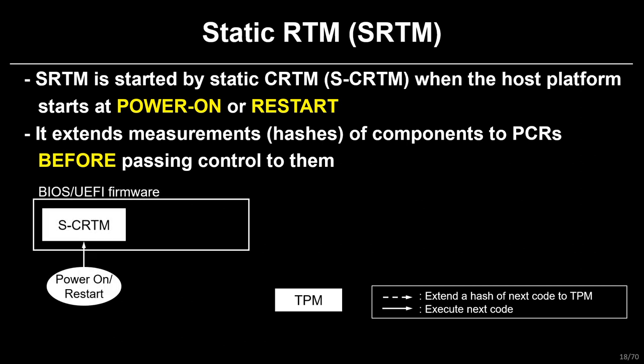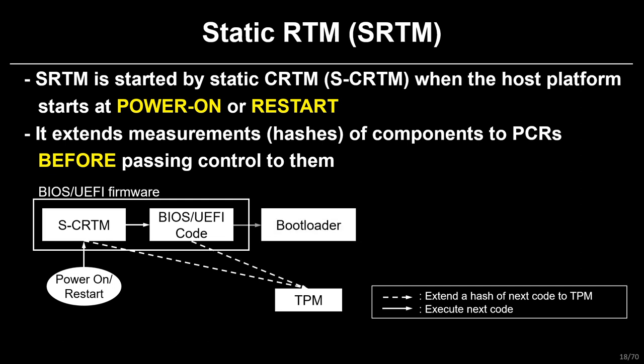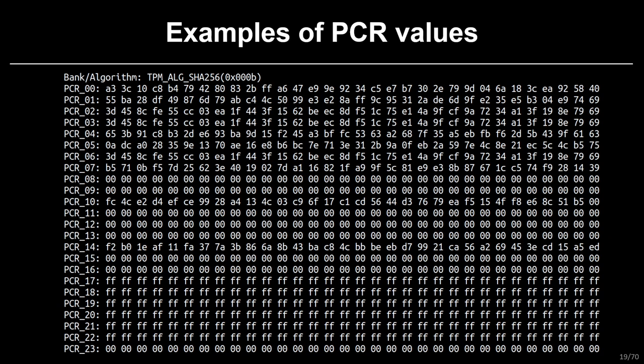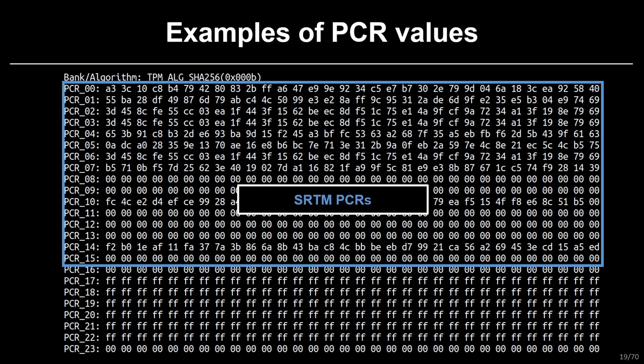Static RTM is started by Static CRTM when the host platform starts at power-on or restart. The important point of SRTM is that it extends measurements, or hashes of components, to PCRs before passing control to them. When the host platform starts at power-on or restart, SCRTM measures itself and BIOS/UEFI firmware code. After that, SCRTM extends hashes to PCRs before transferring control to BIOS/UEFI firmware, and then SCRTM transfers the control. BIOS/UEFI firmware, bootloader, and kernel also measure and extend the next code and transfer control to them. This process is called measured boot. These are examples of PCR values. Static RTM-related PCRs are from PCR number 0 to 15.